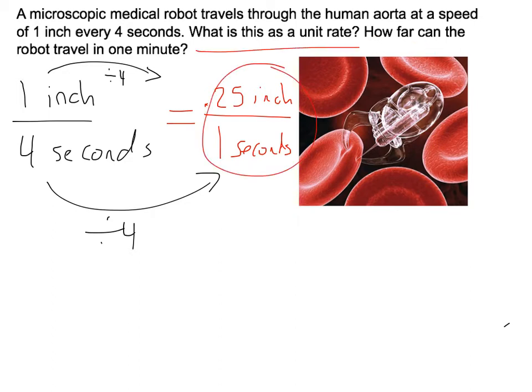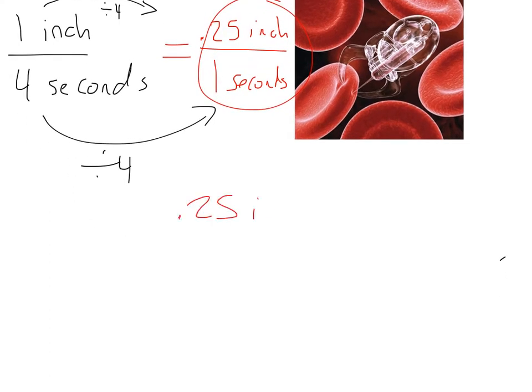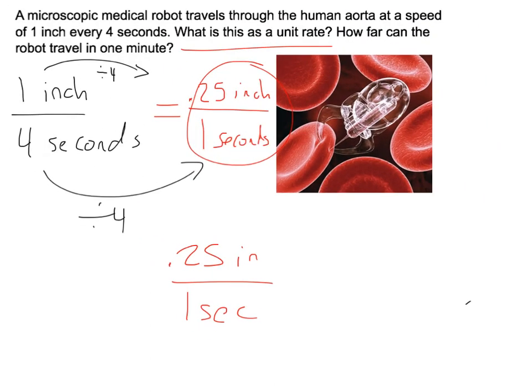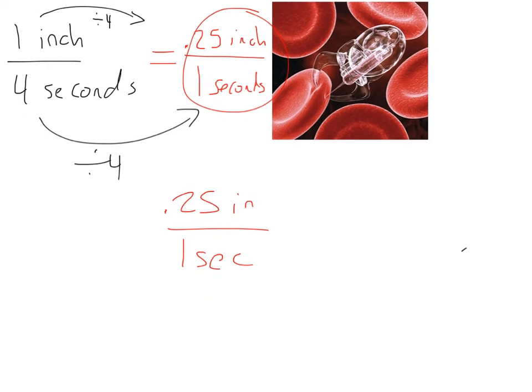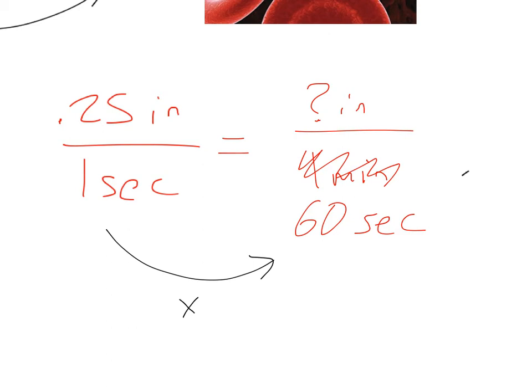Now, how far can it travel in one minute? The nice thing about finding the unit rate, which is 0.25 inches per one second, is that now we can use that to find things like, how far can it travel in one minute? So my question is, this is 0.25 inches per second. I want to know how many inches in one minute. So you might be saying, how do I go from one second to one minute? Well, keep in mind, one minute, that's the same thing as saying 60 seconds, right? So then how do you go from one second to 60 seconds? Of course, you multiply by 60.